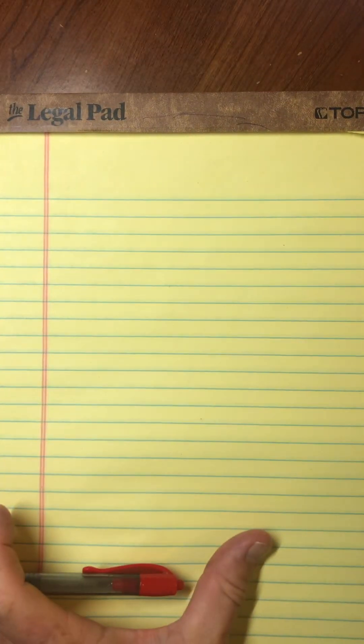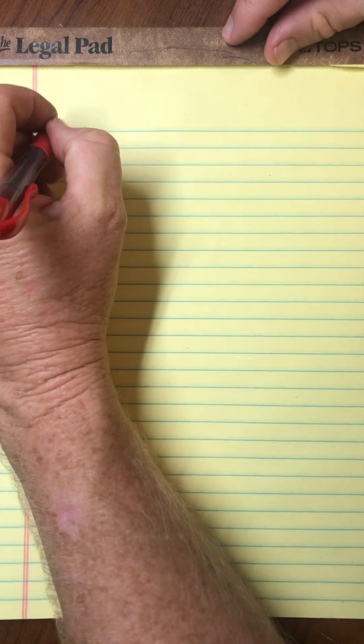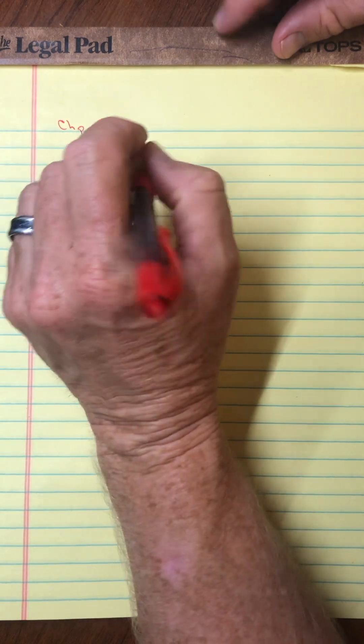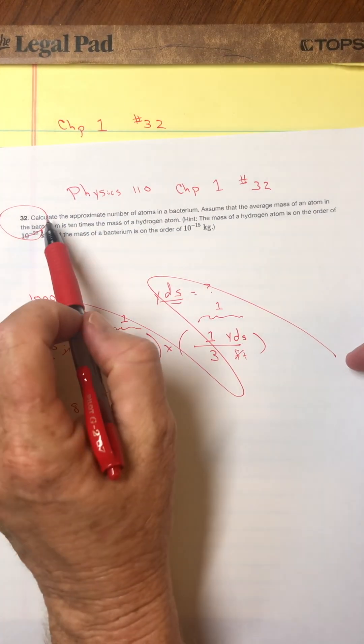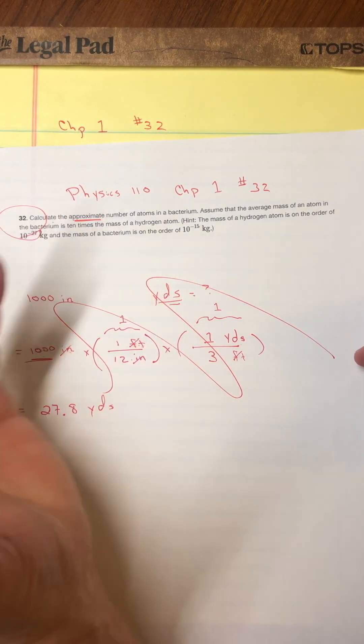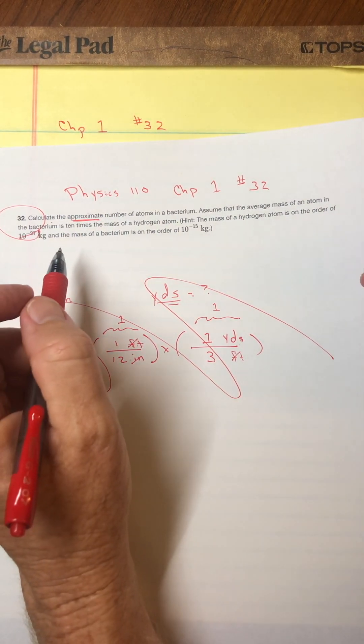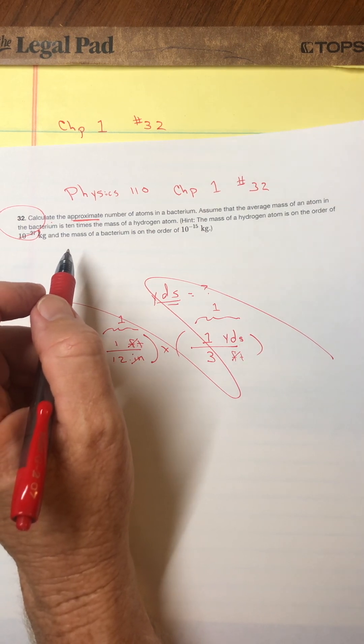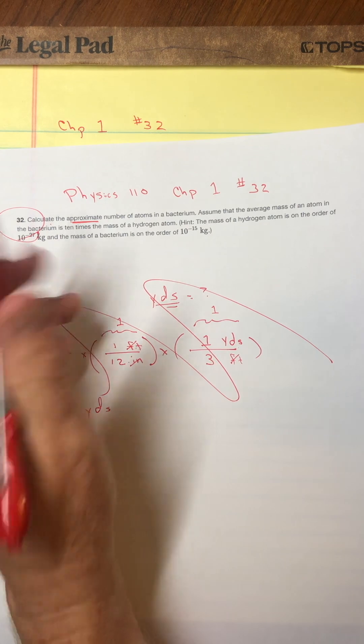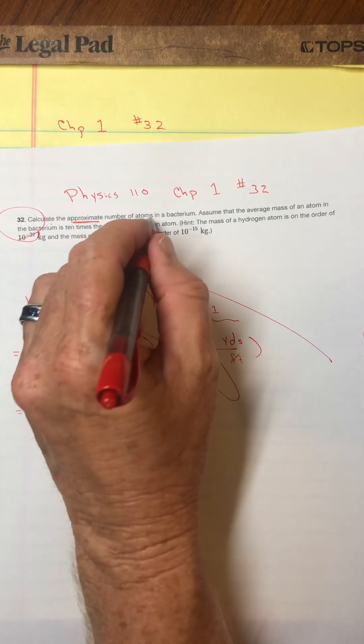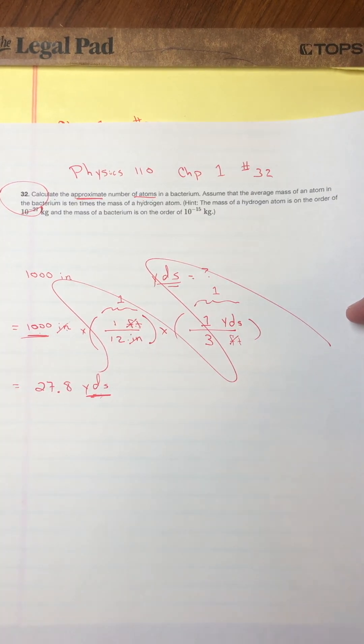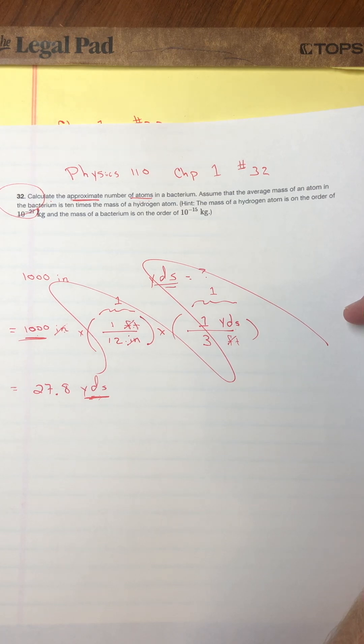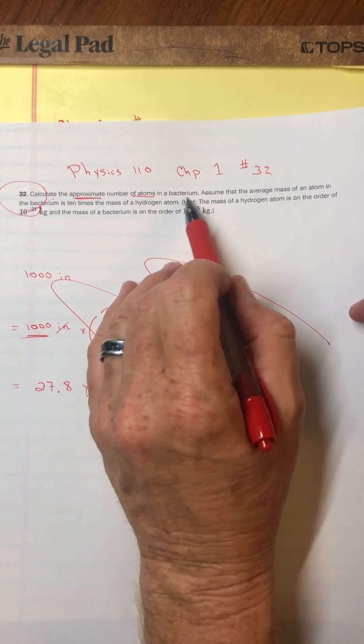All right, so I'm going to grab my yellow pad here. I'll put up here, if anybody's scanning the videos kind of quickly, chapter one, number 32. So it says calculate, and there is an approximation, so we're not going to do everything with exact numerical calculations, we'll just round things, but it says calculate the number of atoms. So like the problem I just did, I want my final answer to be a number of atoms.